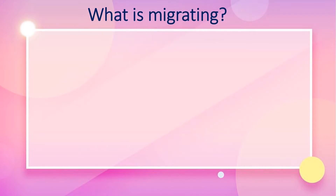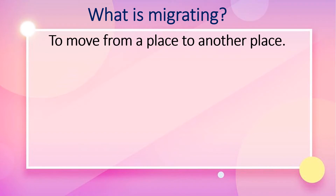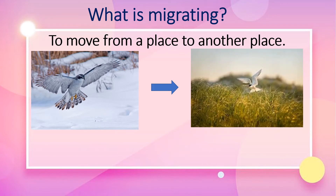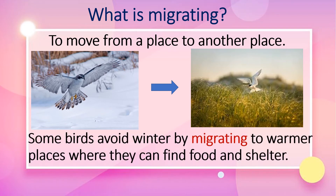What is migrating? When we say migrating, it means to move from one place to another. For example, in the life of a bird — during winter, the bird migrates to another place because they want warmth. Some birds avoid winter by migrating to warmer places where they can find food and shelter, which means a home.